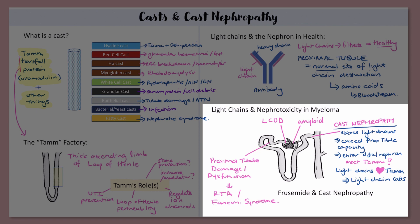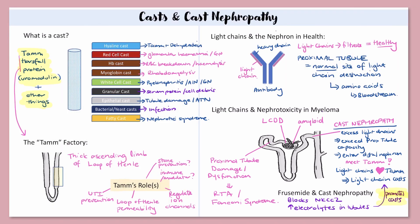You may have heard that furosemide can worsen cast nephropathy. That's because furosemide blocks the sodium-potassium-chloride co-transporter in the loop of Henle. This transporter would normally pump sodium and chloride into the interstitium to help with our countercurrent mechanisms. But if you block this transporter, you're not putting as much sodium and chloride into the interstitium — instead, that sodium and chloride stays right there in the tubular lumen. We said that high concentrations of electrolytes in the tubular lumen tend to enhance cast formation, and so that's how furosemide can potentially aggravate cast nephropathy.